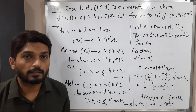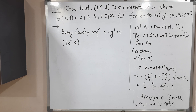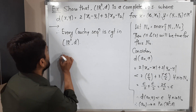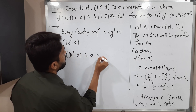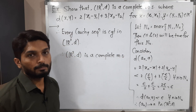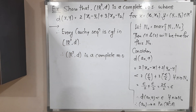We started with any arbitrary Cauchy sequence and proved that it is convergent. Therefore every Cauchy sequence is convergent in ℝ² with metric D, and by definition, ℝ² with D is a complete metric space. This completes the example. We will meet in the next video. Thank you.